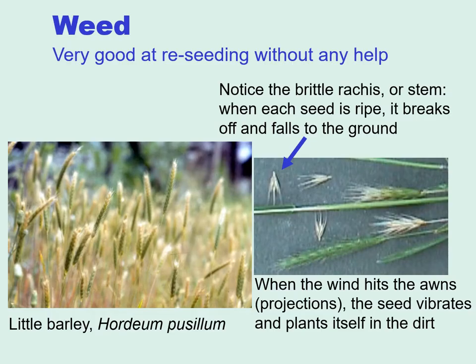One of the ways in which weeds differ from domesticates is that weeds are very good at reseeding without any help from humans. Here with little barley, notice the brittle rachis or stem. When each seed is ripe, the next piece of the rachis breaks off, and the seed falls to the ground with the awns up. Then when the wind hits the awns, the seed can actually plant itself.